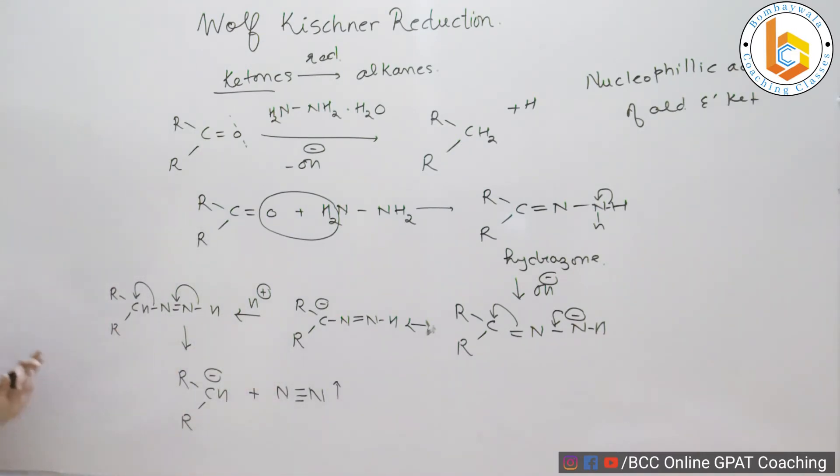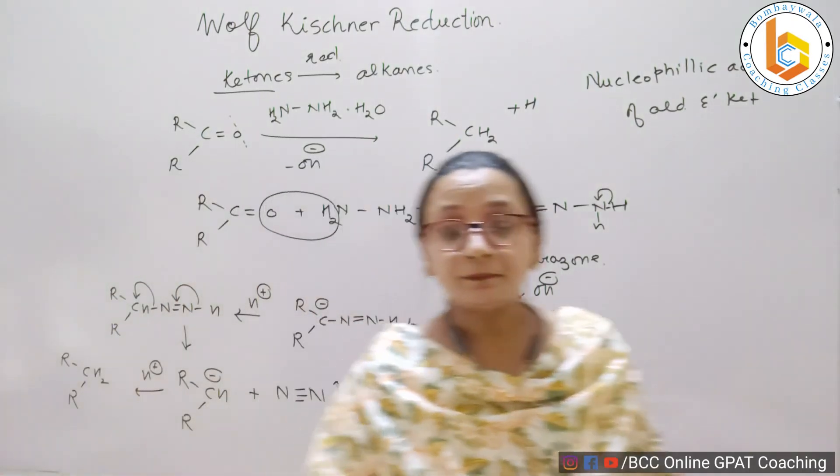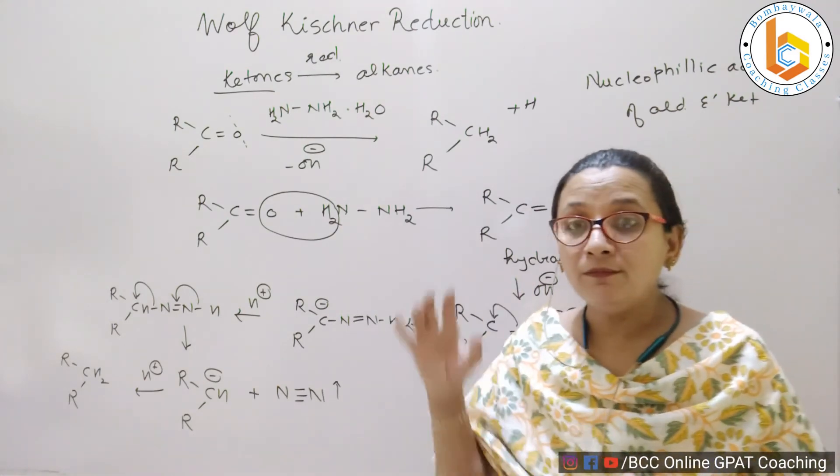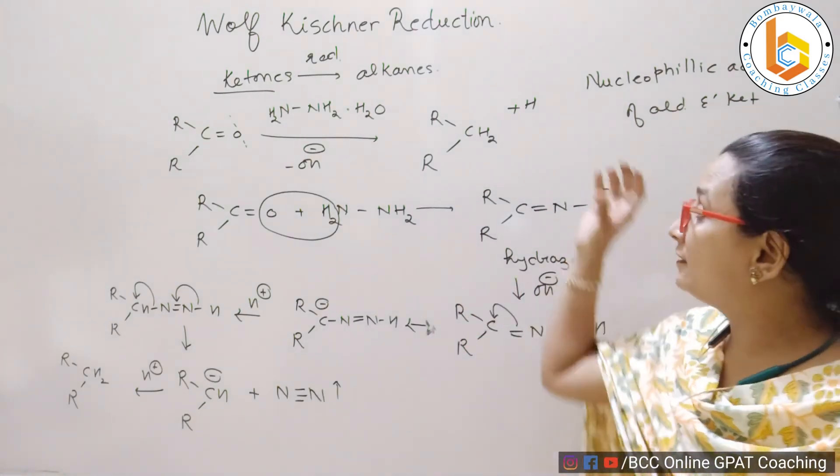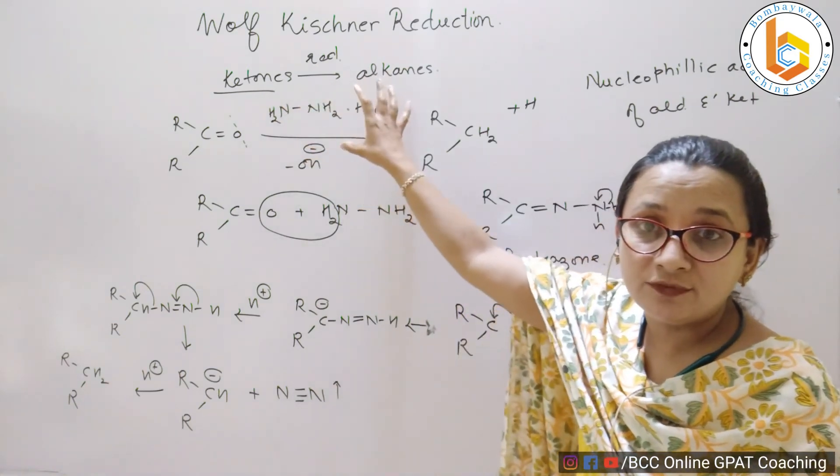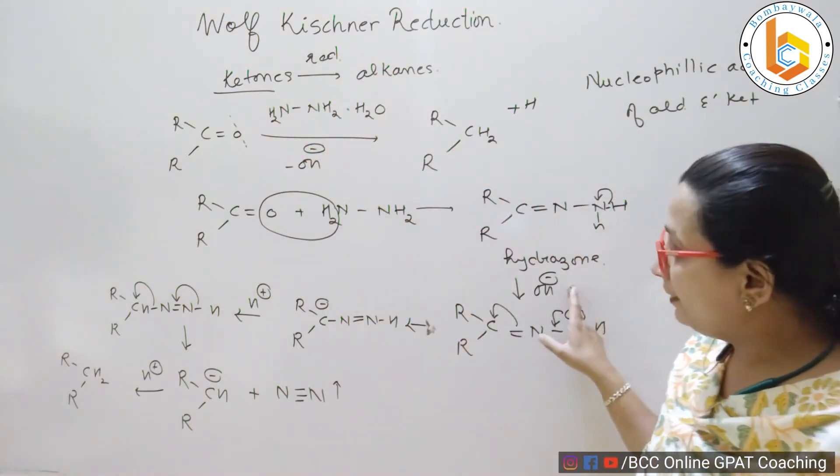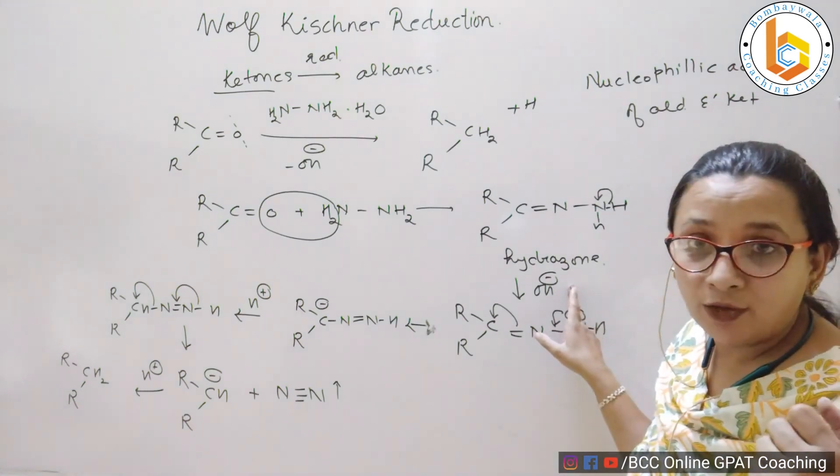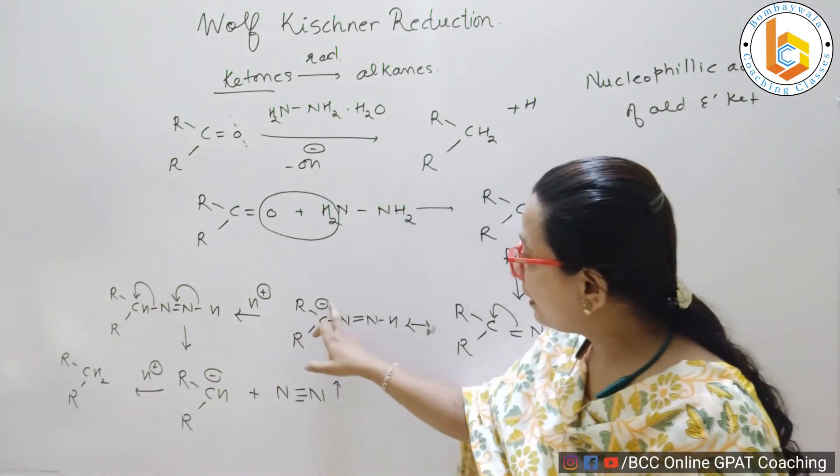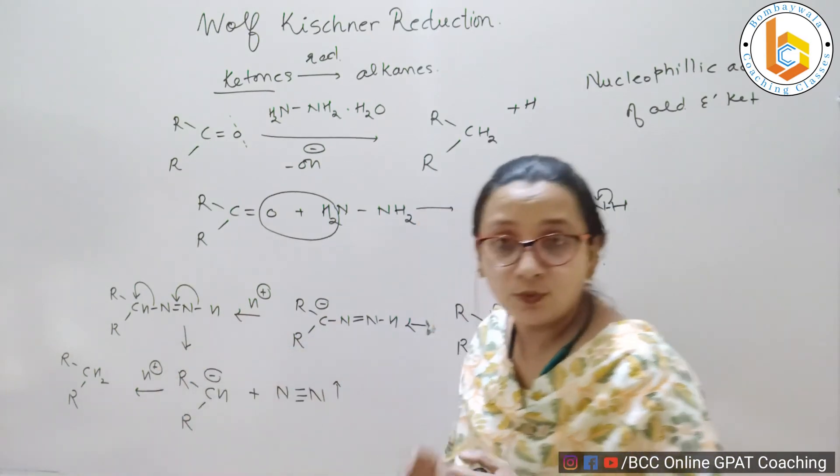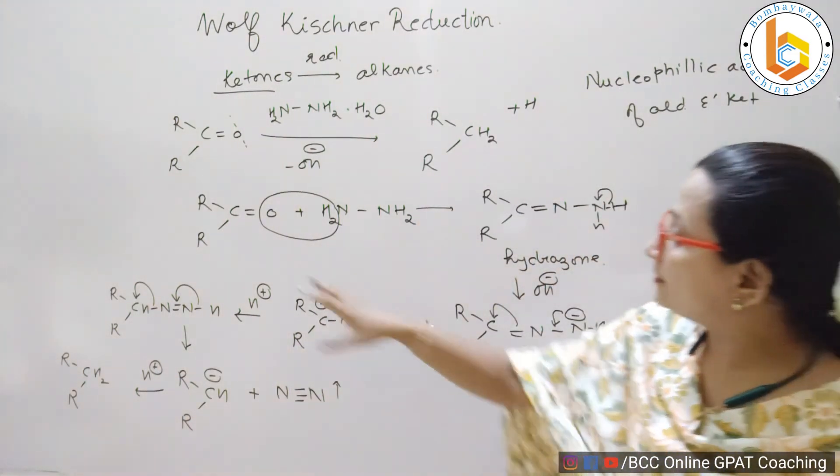Once this happens, again there is a proton in the system and this proton comes and attaches on this carbanion and you get nothing but an alkane. So, we see that from ketone when hydrazine reacts with ketone, we said that there is a molecule of water. So, two OH groups are involved to pull the proton out and there are two protons also involved that are coming to this carbanion.